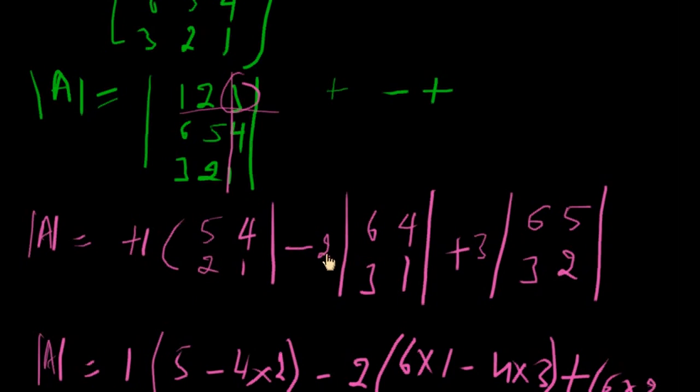Then minus 2. Leave this column and this row. And rest is 6, 3, 4, 1.